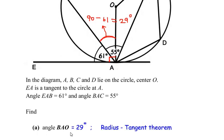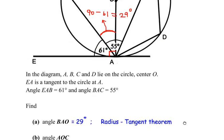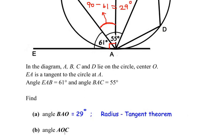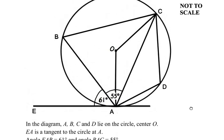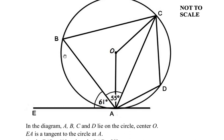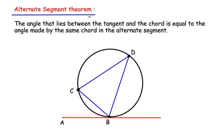Now let us look at the next question: find out angle AOC. Let us see where angle AOC is — it is over here. To find out angle AOC we are going to make use of a circle theorem known as the alternate segment theorem.